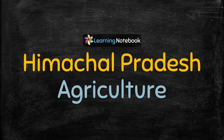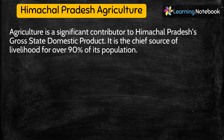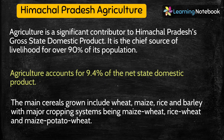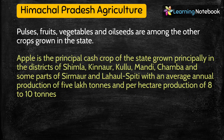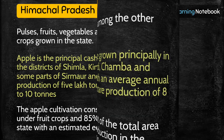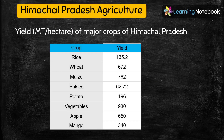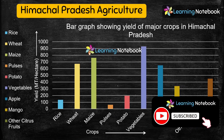Now the last and one of the most important ideas for your Maths Art Integrated Project is the Agriculture of Himachal Pradesh. Students, you can depict the yield of major crops in Himachal Pradesh using a bar graph as shown here.